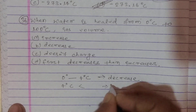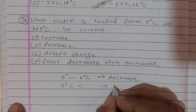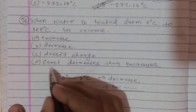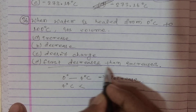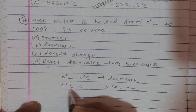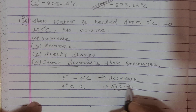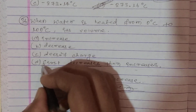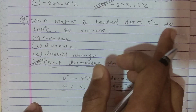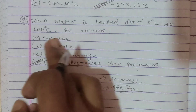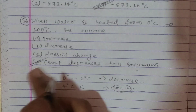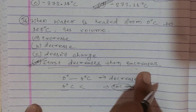Above 4 degrees Celsius, the volume of water increases. So when water is heated from 0 degrees Celsius to 100 degrees Celsius, its volume first decreases then increases.